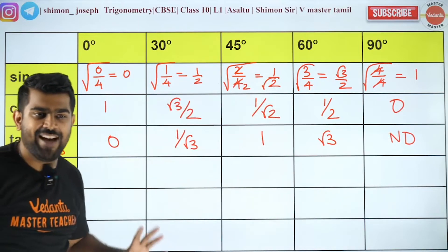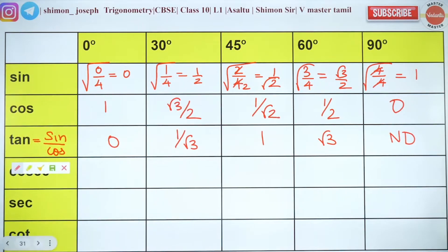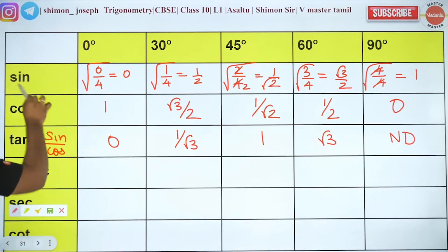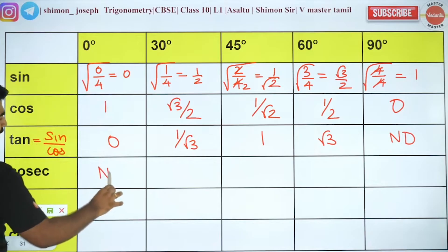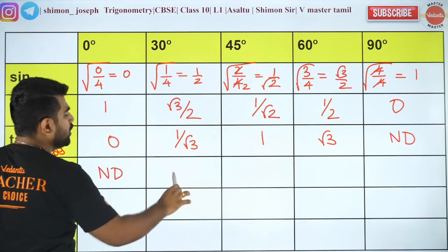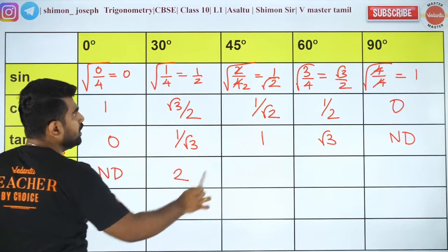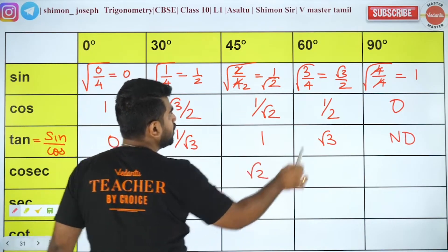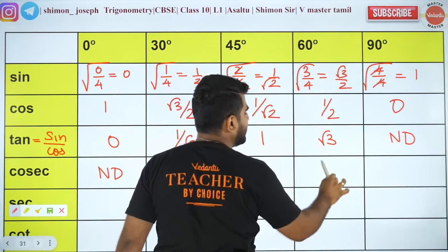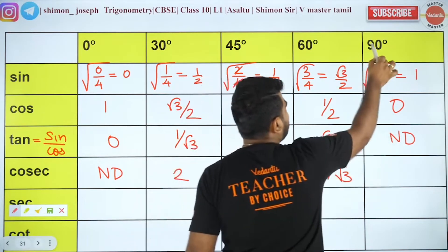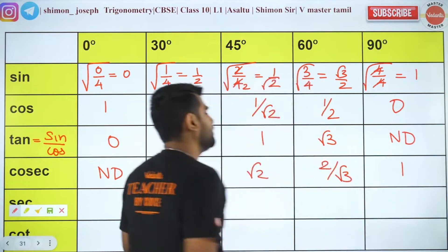Excellent! Now what is cosec? Cosec is 1/sin. So cosec 0: 1/0 is not defined. Cosec 30: 1/sin 30 = 2. Cosec 45: 1/sin 45 = √2. Cosec 60: 1/sin 60 = 2/√3. Cosec 90: 1/sin 90 = 1.